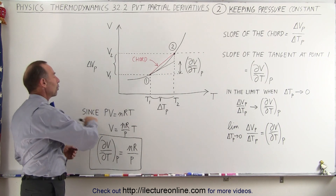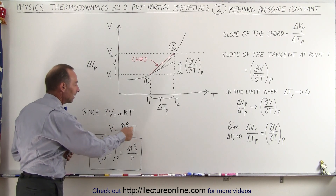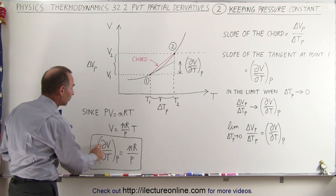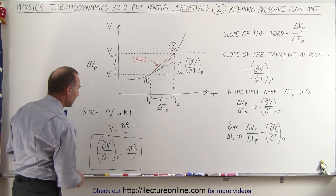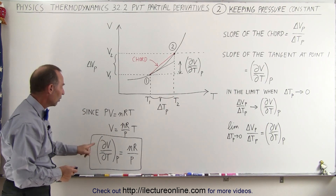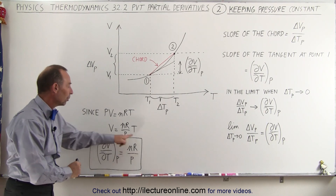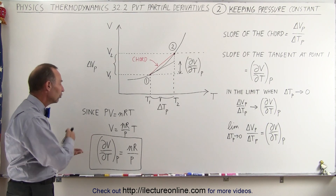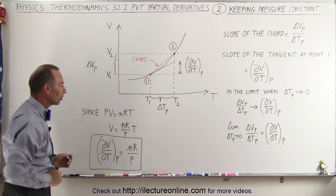Going to the equation of the ideal gas, PV = nRT, and solving for V in terms of T, nR over P simply becomes a constant. Taking the partial derivative of volume with respect to temperature keeping pressure constant, this simply becomes nR over P. So this is our first derivative — the change in volume with respect to temperature at constant pressure equals nR over P. This holds for any isobaric state change where only volume and temperature can change.